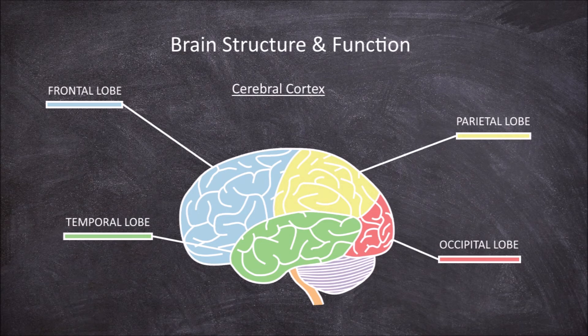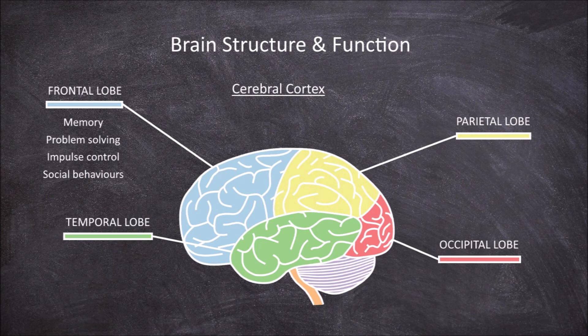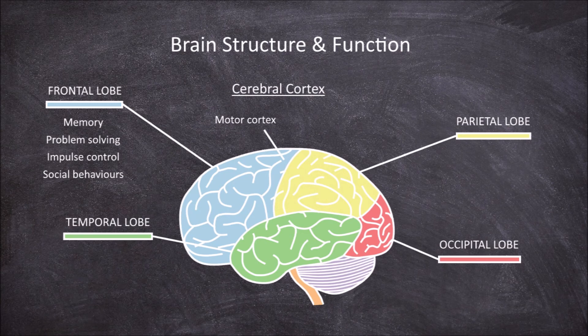The frontal lobes have a range of functions. They are involved in executive functions such as memory, problem solving, impulse control, and social behaviors, among others. The frontal lobes are also involved in motor functions. The posterior area of the frontal lobe is known as the motor cortex and is involved in voluntary motor functions.